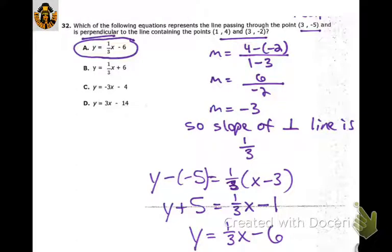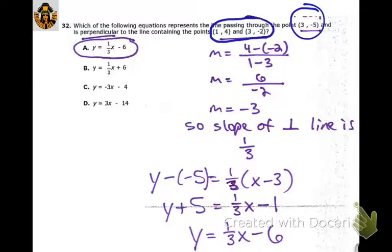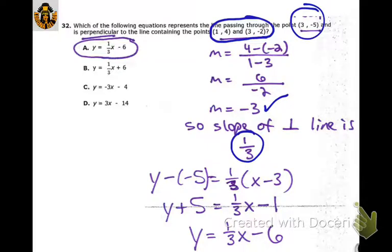We want to write an equation through that point perpendicular to the line containing these given points. We calculate the slope and find it's negative 3. We flip it and change the sign, so our slope is 1/3. Then we use point-slope form and simplify to get the answer.